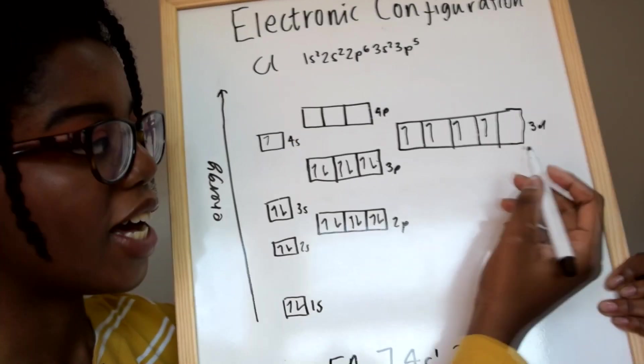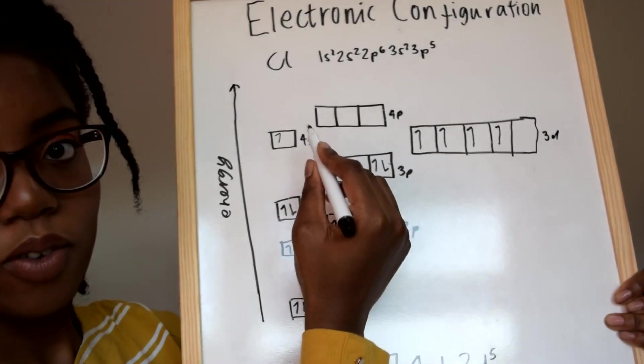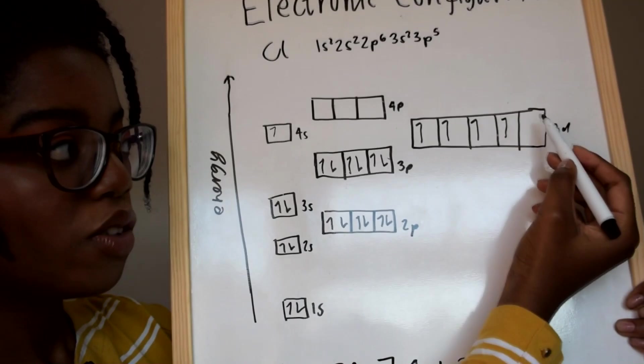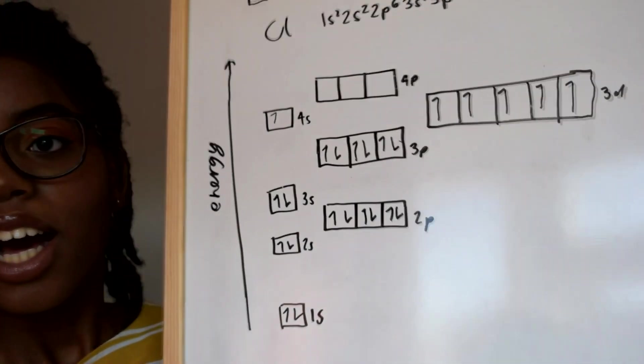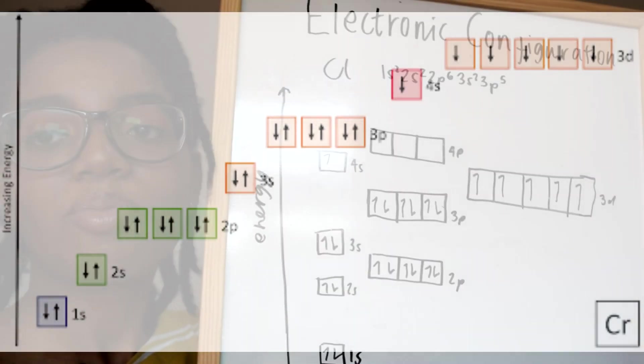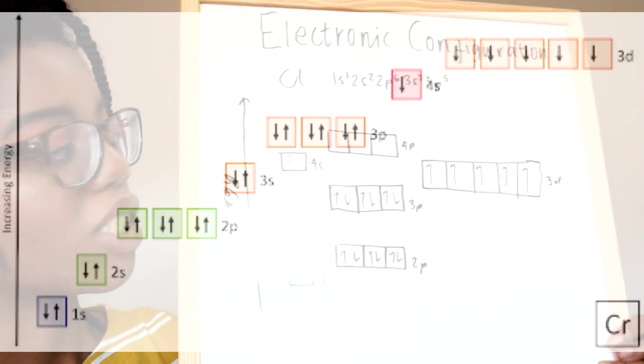Instead, the electron that would have been in 4s2 is moved down to the lower energy of 3d, just making happier singly filled electrons that are just more balanced.